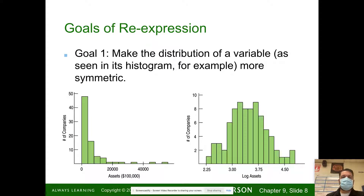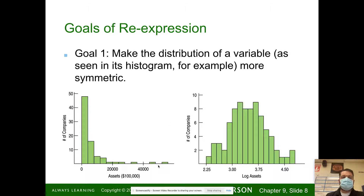Goals of re-expression: for example, make the distribution of a variable — as seen in a histogram — more symmetric. Here you have assets and the number of companies that have that many assets. When you take the log of the assets, when you run it through a logarithmic function, you seem to have a little better symmetrical distribution.